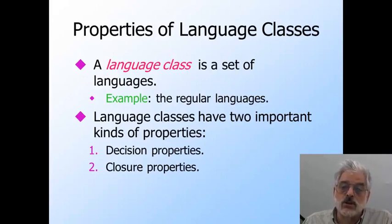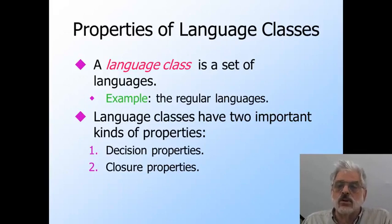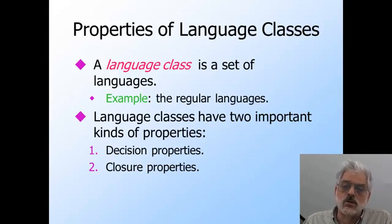Unfortunately, as we meet larger classes of languages, we find that in general, the larger the class of languages, the less likely there is to be an algorithm to answer questions about languages in that class. The second important issue is closure properties of the class. These involve applying operations such as union to languages in the class. We're going to defer the discussion of closure properties to another lecture, although I'll give you an example on the next slide.